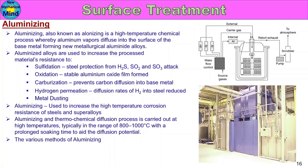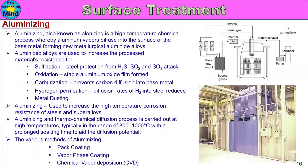The various methods of aluminizing are: pack coating, vapor paste coating, and chemical vapor deposition (CVD). Aluminizing and chromizing use the same methods; the difference is the donor material — aluminum versus chromium.